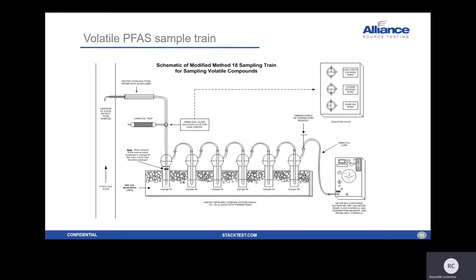Here's a schematic of the volatile PFAS train. You've got the stack, a single-point probe — really just an opening is all that's needed — that goes through the heated probe into a series of impingers containing methanol, completely immersed in a dry ice bath. It's especially important to keep them as chilled as possible. The impingers are typically analyzed separately so you can evaluate breakthrough, which happens very easily in the sample train. If they get too warm, you'll see hits in impinger six, indicating sample loss.